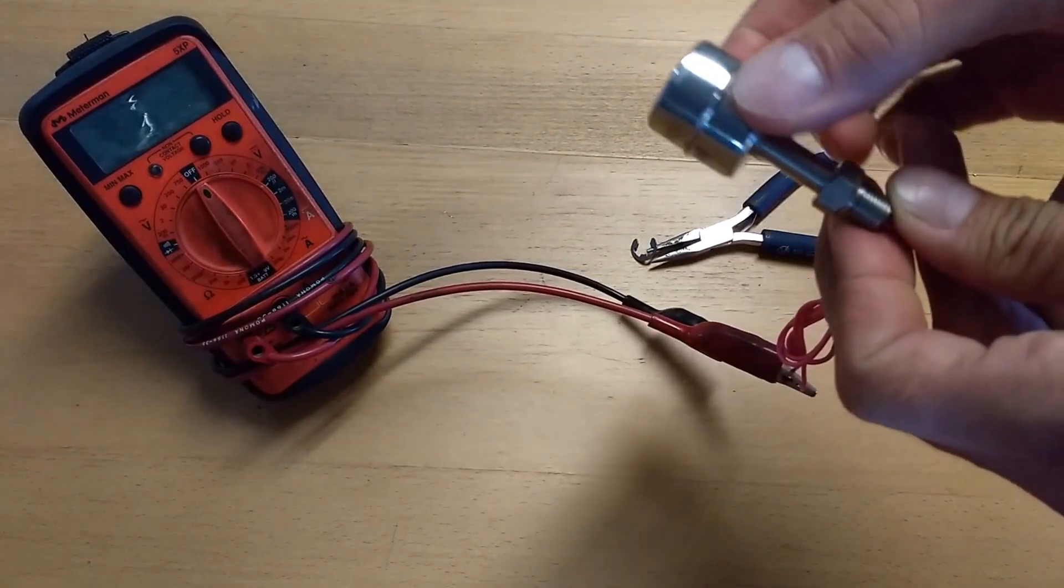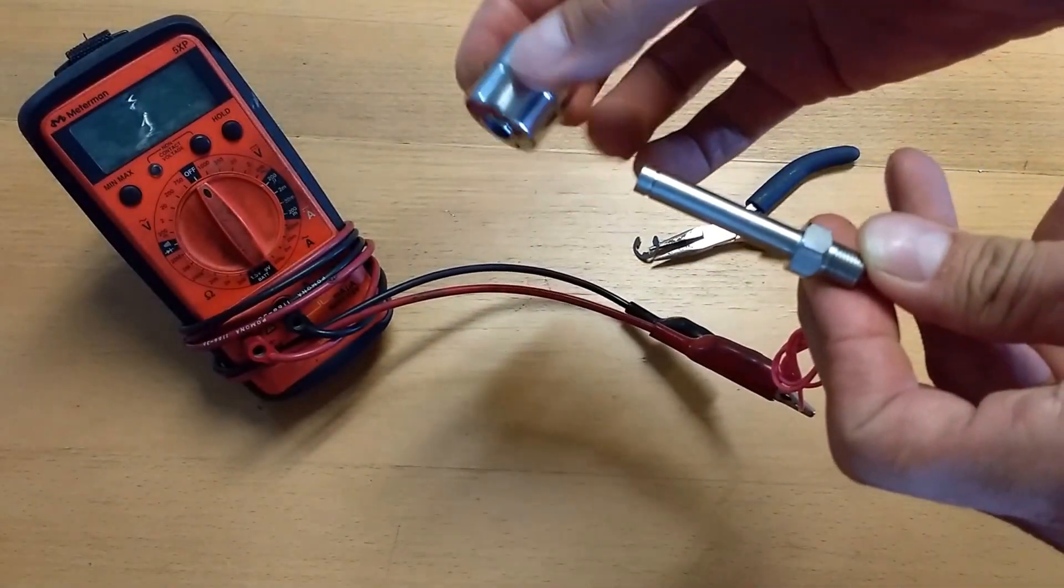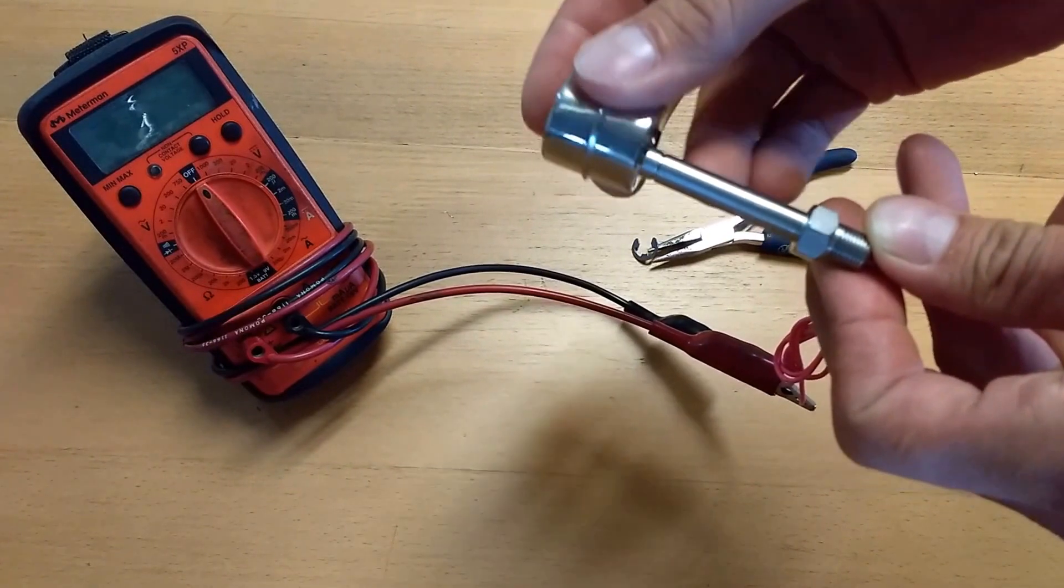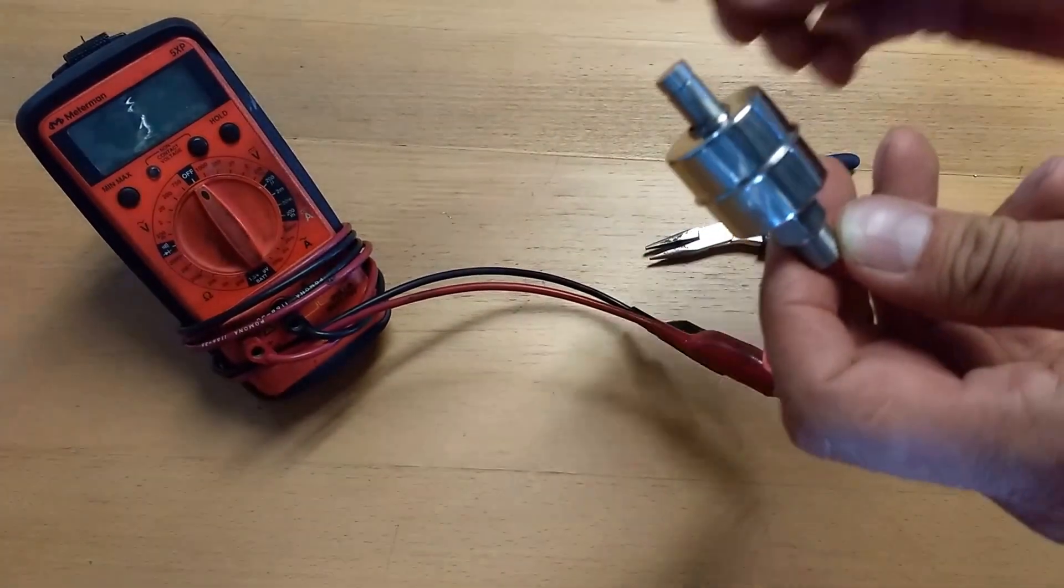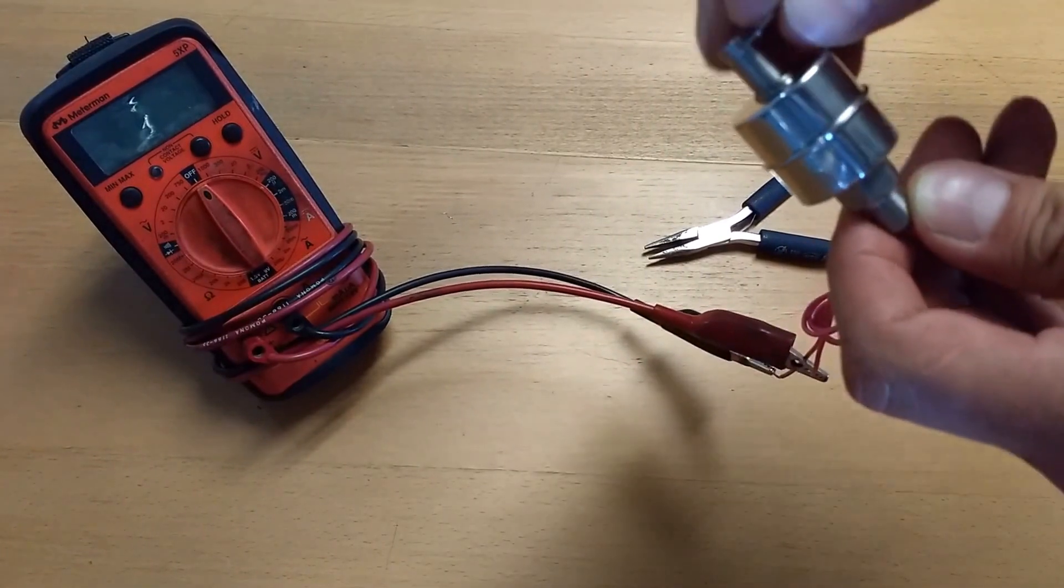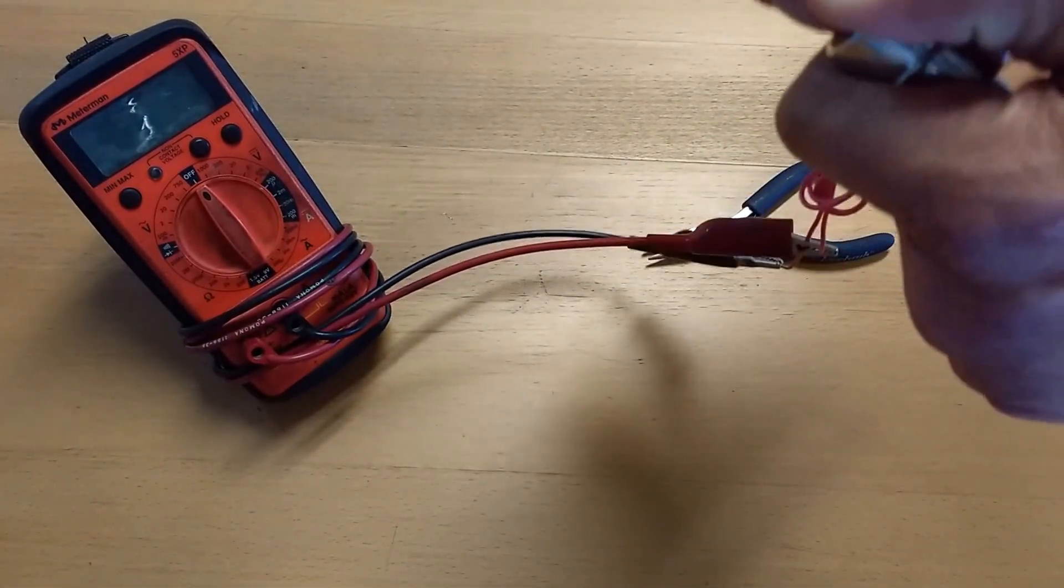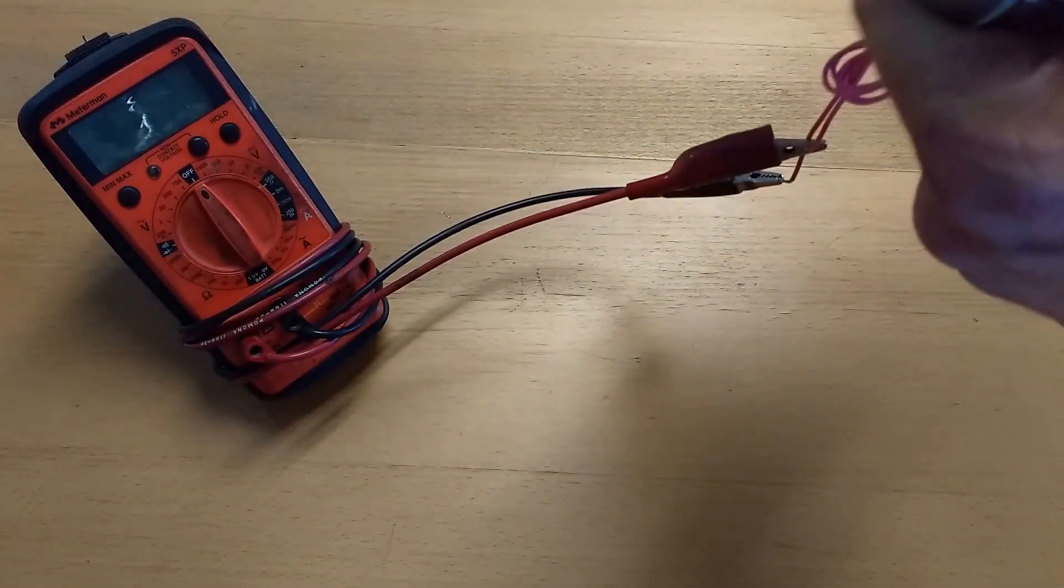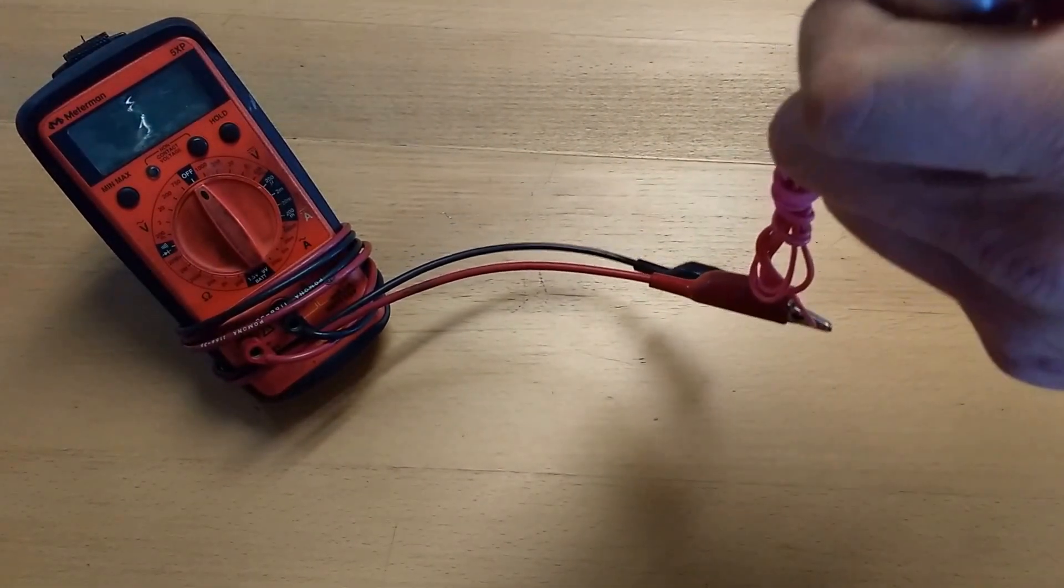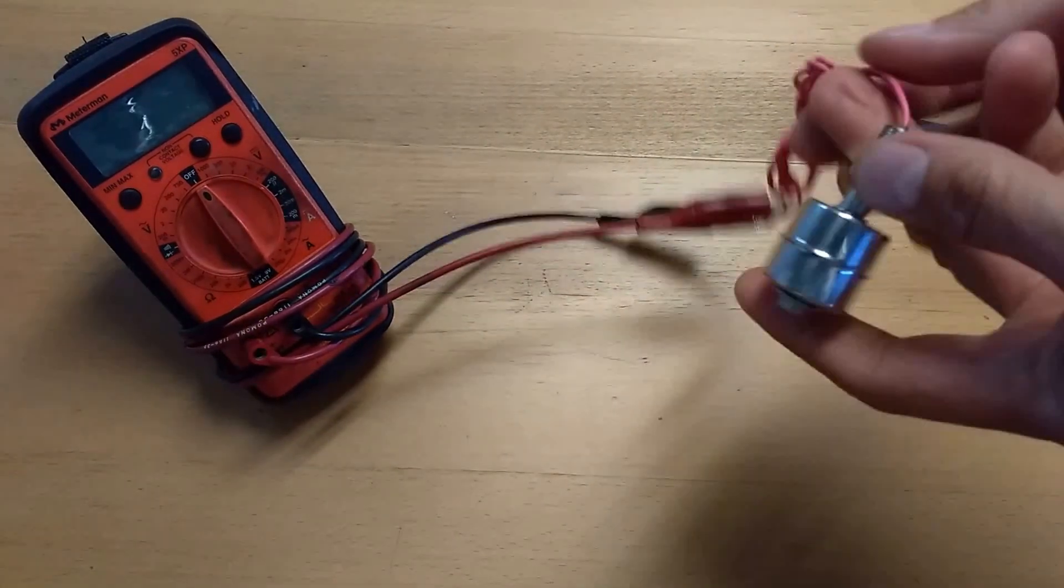Take the float off, invert the float, flip it around, put it back on and reinstall the clip or retainer. Just snap it right into the groove, good to go.